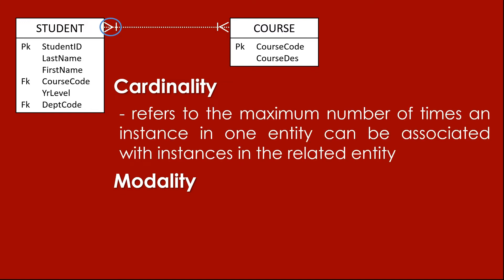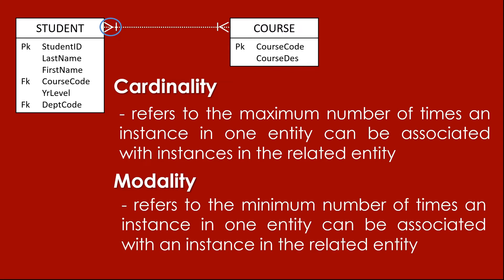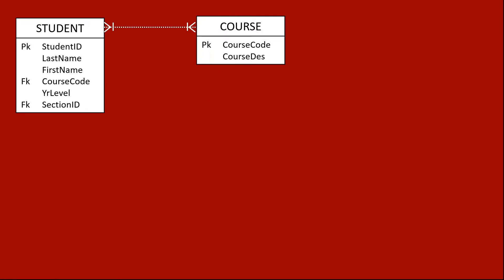Those symbols represent what we call cardinality and modality. Cardinality refers to the maximum number of times an instance in one entity can be associated with an instance in the other entity, while modality refers to the minimum number of times an instance in one entity can be associated with an instance in the related entity. So cardinality is the maximum number and modality is the minimum number. The minimum or modality is the outer part of the symbol, while the inner part closer to the entity box is the maximum or cardinality.